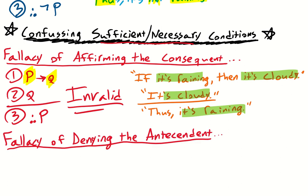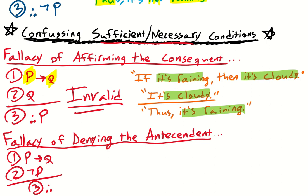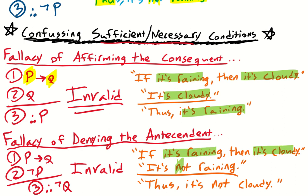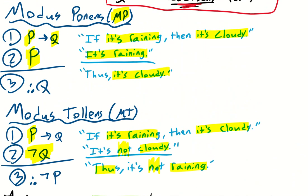Then we have the fallacy of denying the antecedent. First premise: if p, then q. Second premise: not-p. And then, what if we said: because p is not the case, q must not be the case? It's really the same basic mistake — we're confusing sufficient and necessary conditions. This is invalid; it treats the antecedent as necessary, but it's not necessary. For example: if it's raining, then it's cloudy. It's not raining — thus it's not cloudy. Using our intuition and common sense, we can see that is clearly fallacious. Just because it's not raining, that doesn't mean it's not cloudy. Once we understand sufficient and necessary conditions, we understand why we have the fallacy of affirming the consequent and the fallacy of denying the antecedent, but we also understand why modus tollens and modus ponens are valid inferences.